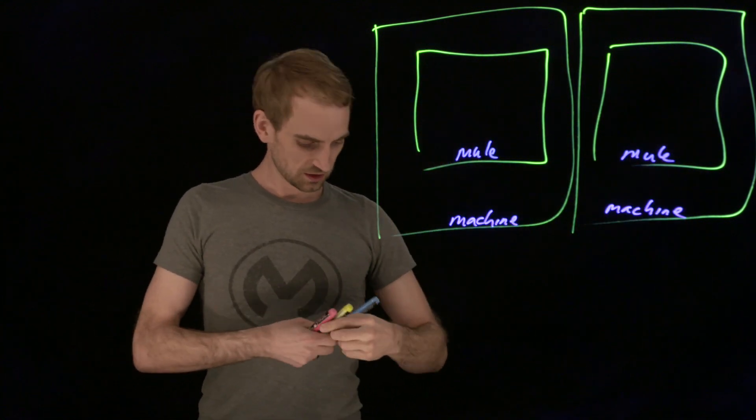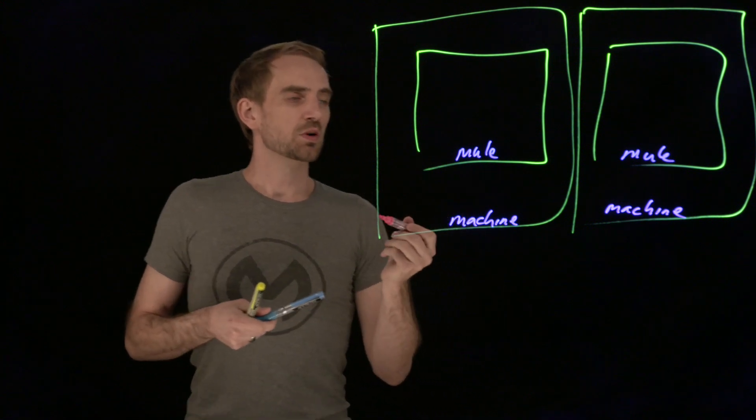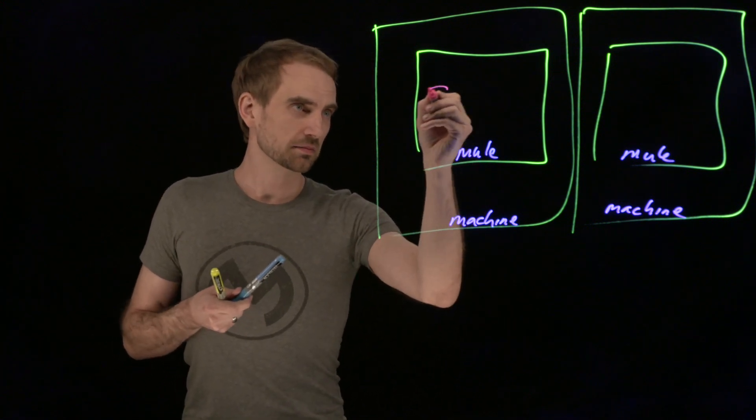This is the Mule runtime. And we've got, let's do object store. We've got the in-memory or transient object store.